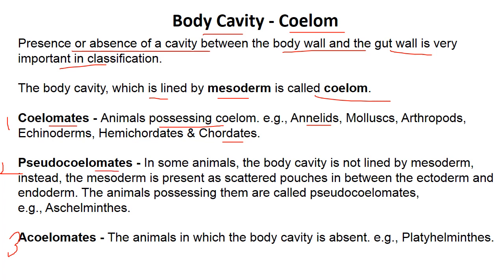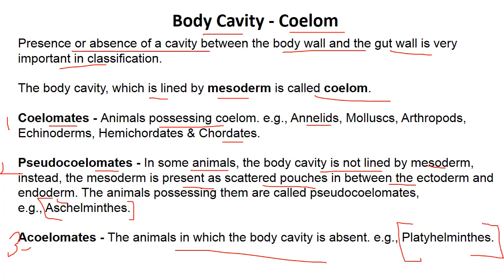Pseudocoelomate means in some animals the body cavity is not lined by mesoderm. Mesoderm is present but as scattered pouches between ectoderm and endoderm, so it's not a true coelom. They are called pseudocoelomate — only phylum Aschelminthes belongs to pseudocoelomate. Acoelomate means absent — in this kind of animal there is no body cavity; it is totally absent. Like phylum Platyhelminthes is the only phylum that does not have any coelom.